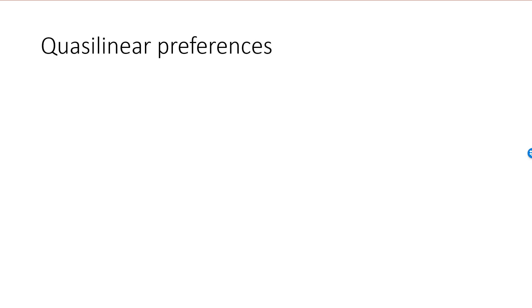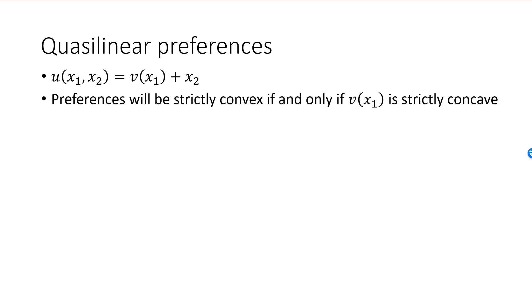Optimal choice with quasi-linear preferences. If the consumer has quasi-linear preferences with indifference curves that are horizontal translates, then her utility function can be written as a quasi-linear function, u is equal to some function v of x1 plus x2. The equation of an indifference curve will be x2 equal to u minus v of x1. So preferences will be strictly convex if and only if v is strictly concave.